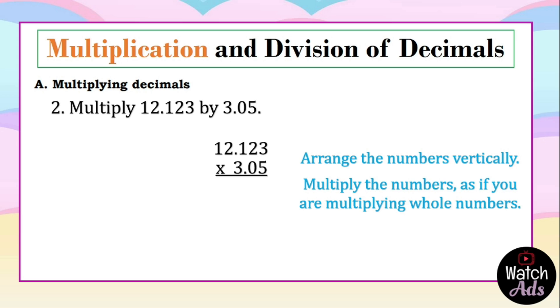5 multiplied by 3 is 15, that's 5 carry 1. 5 multiplied by 2 is 10 plus 1 is 11, that's 1 carry 1. 5 multiplied by 1 is 5 plus 1 is 6. 5 multiplied by 2 is 10, we have 0 carry 1. 5 multiplied by 1 is 5 plus 1 is 6.